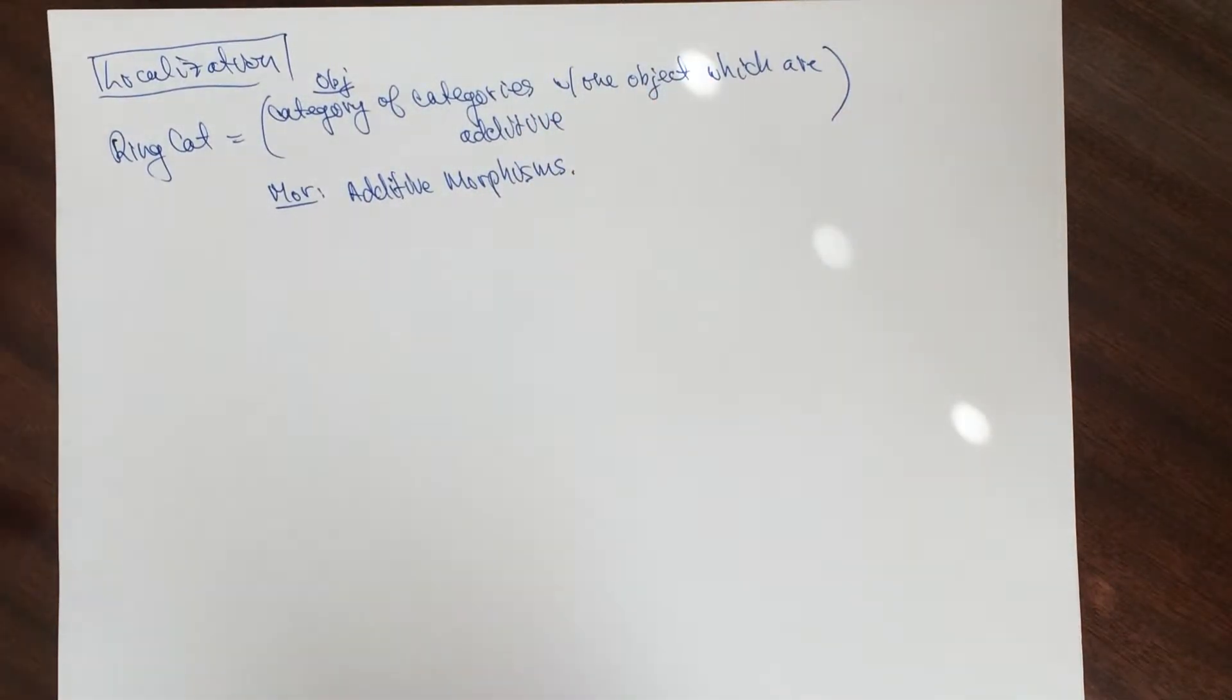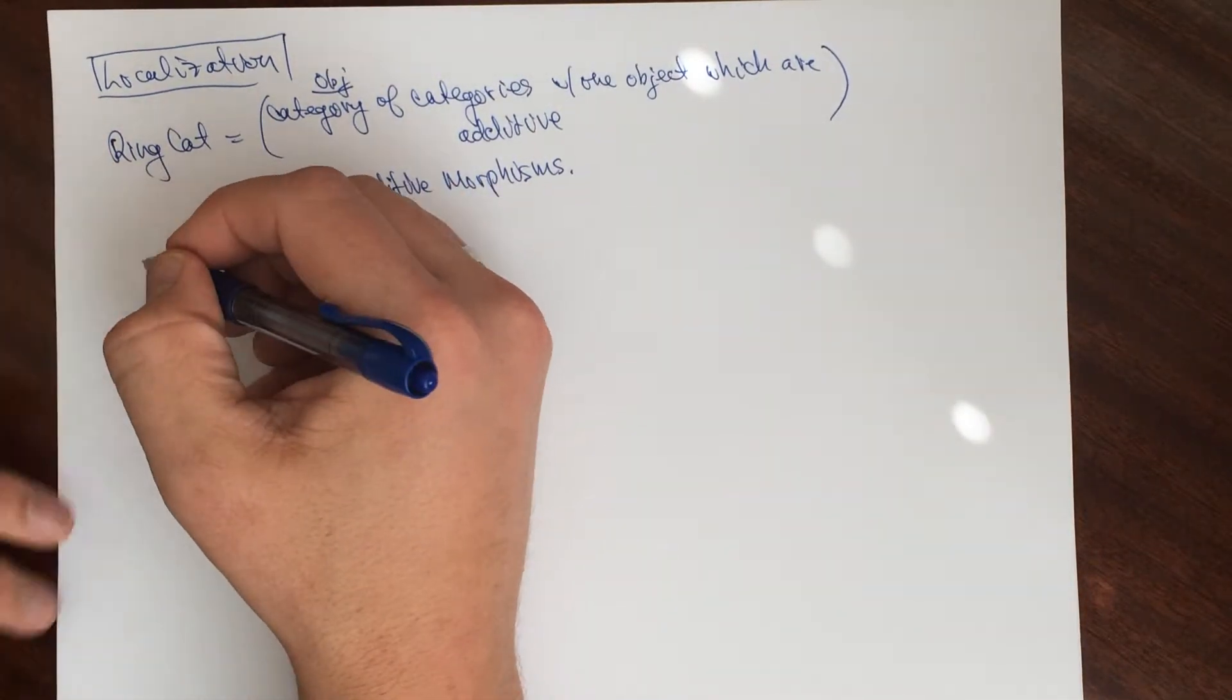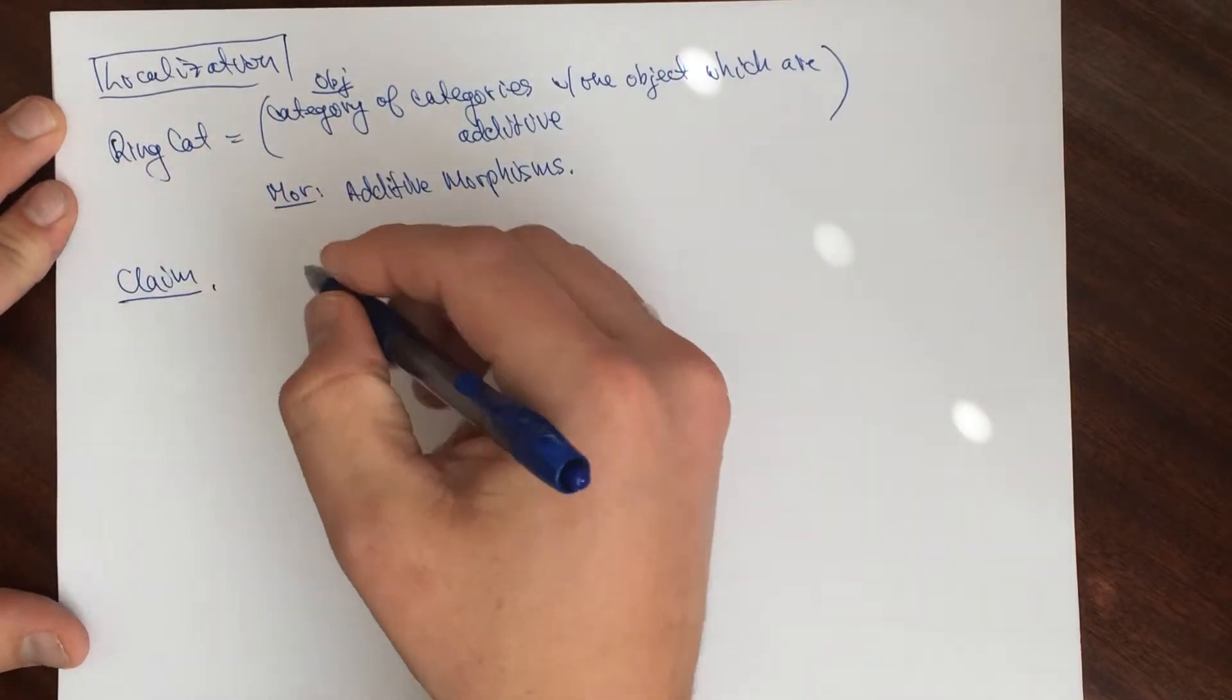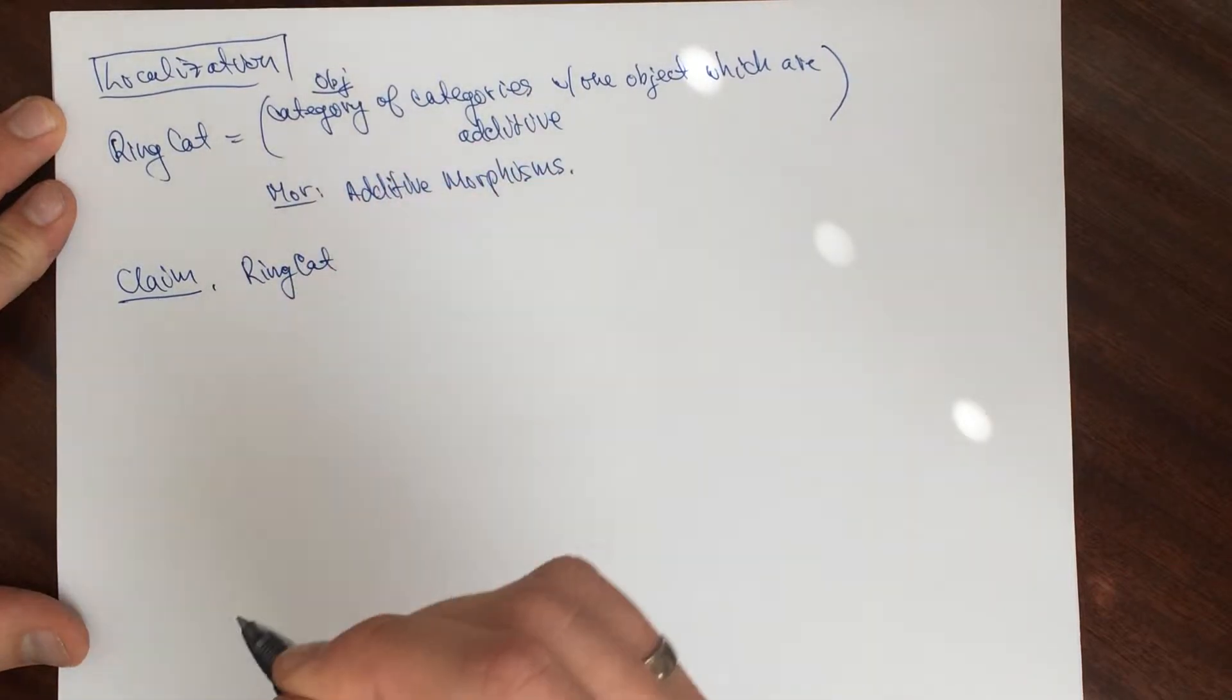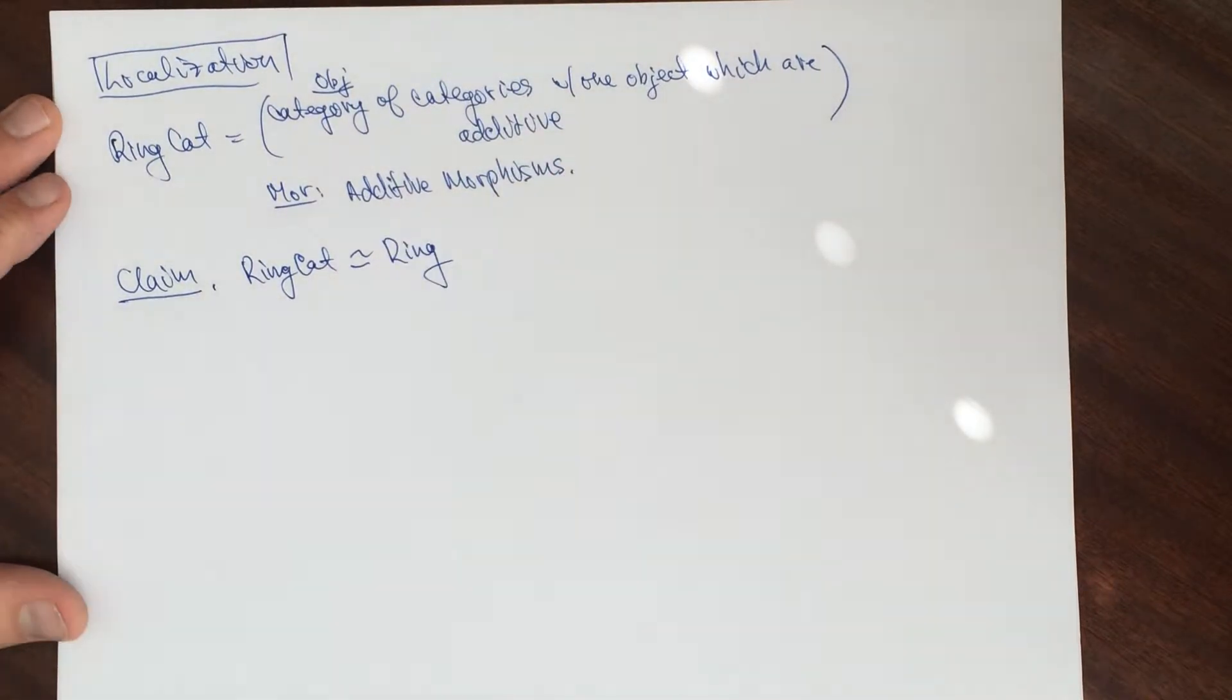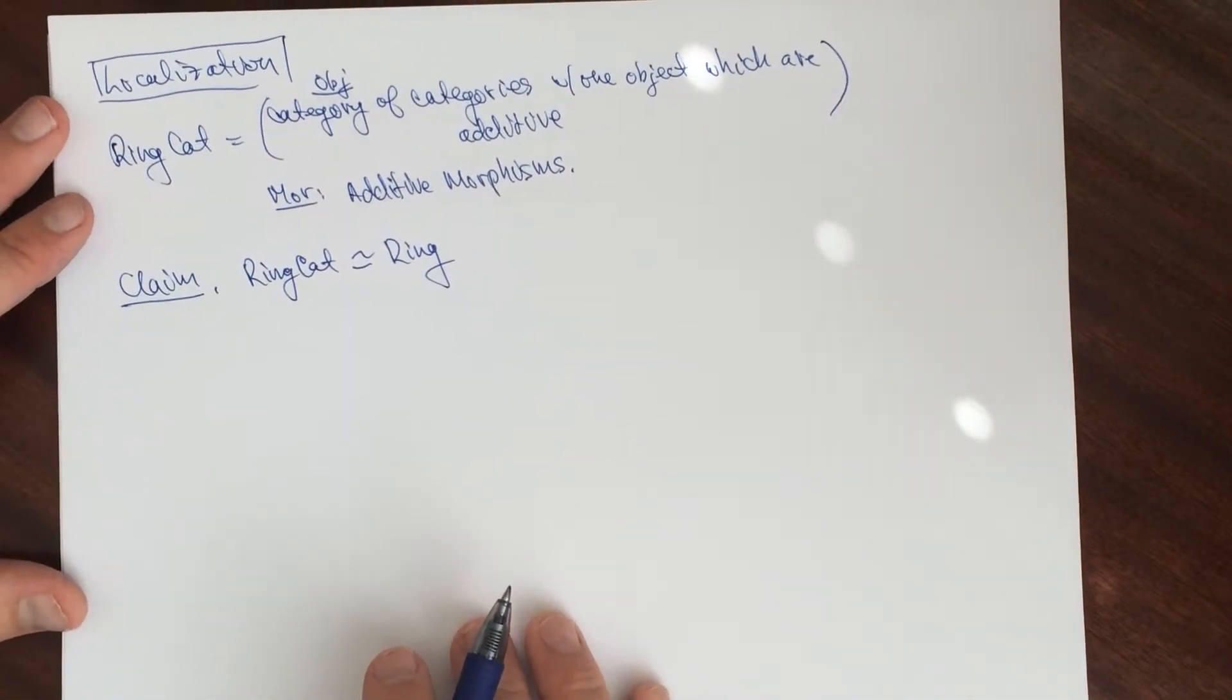I'm going to say this is isomorphic to the category of unital rings. Not necessarily commutative. But they do have an identity.